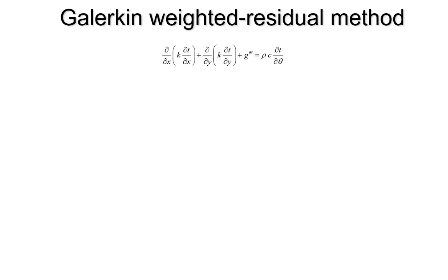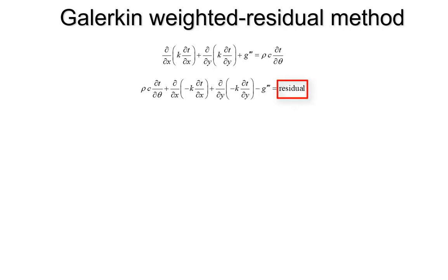We're going to look at the Galerkin weighted residual method for our finite element problem. The first thing we do is rearrange our partial differential equation so that it equals zero. If we put the exact solution into this equation, we get exactly zero. If we put in an approximate solution — such as what we get with our finite element method — we get the residual, which is what we'd like to be zero but isn't.